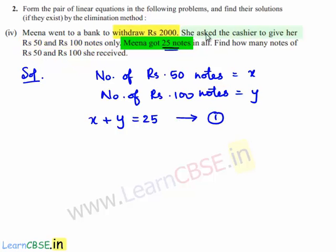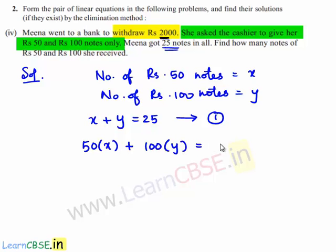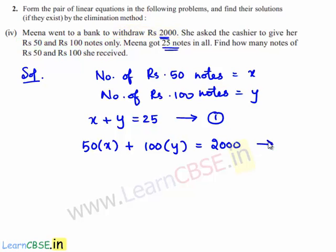The other condition is that Meena asked the cashier to give her Rs. 50 and Rs. 100 notes only to withdraw Rs. 2000. So we can write 50 times x plus 100 times y is equal to 2000. This is equation number 2.